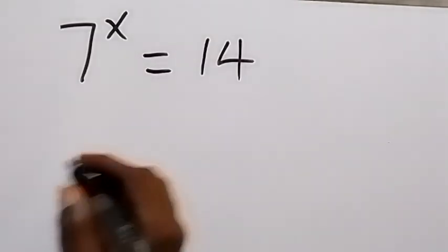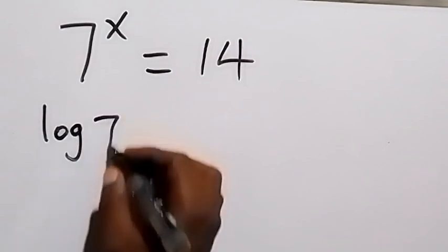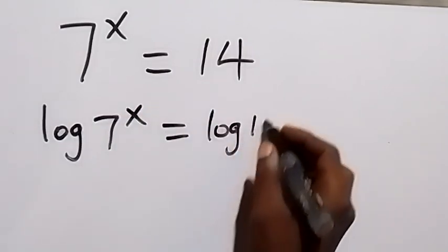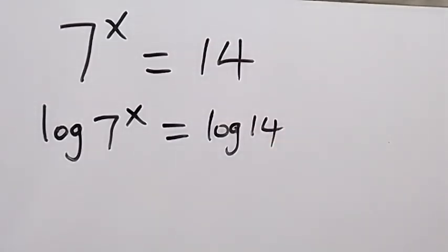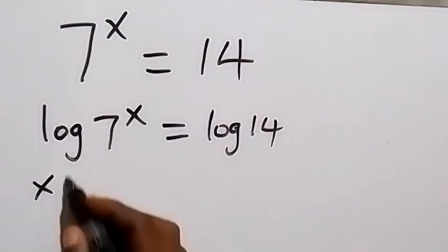From here, let's take the log on both sides. We have log 7^x equals log 14. Then from here we apply the power law, taking x to the back. We have x log 7 equals log 14.